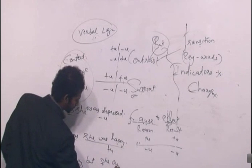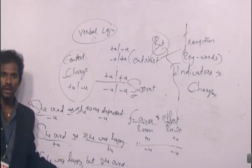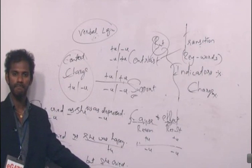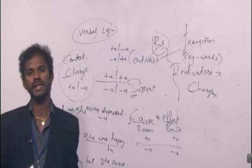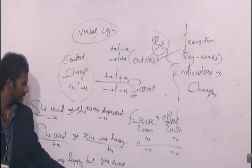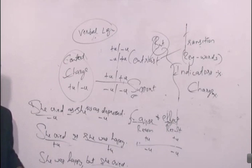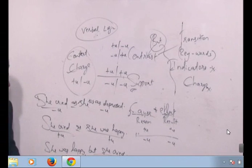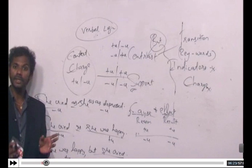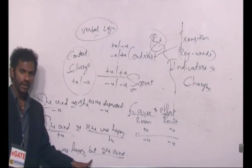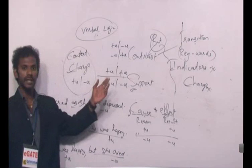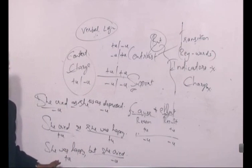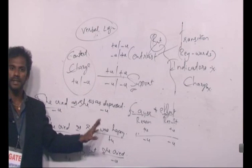What if I write: 'She was happy but she cried'? In this context, is 'she cried' negative or positive? 'But' is a contrast indicator. A contrast indicator must connect contrasting ideas — one positive and one negative. 'But' is a contrast indicator, and the first idea 'she was happy' is positive. So the second idea must be negative. Therefore, in this context, 'she cried' is negative.